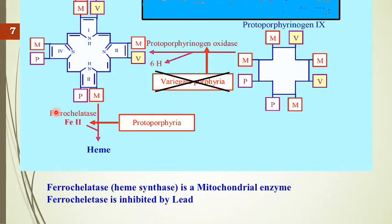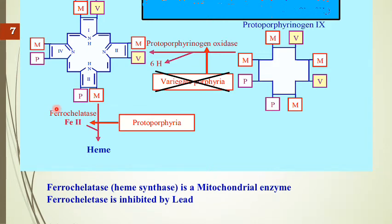The last reaction (step 8) is catalyzed by ferrochelatase. This enzyme requires ferrous iron (Fe²⁺), which is inserted into the porphyrin ring and ligated by four covalent bonds to the four nitrogen atoms — producing heme. Protoporphyrin IX is the direct precursor of heme. Ferrochelatase is also called heme synthase, and this is a mitochondrial enzyme.